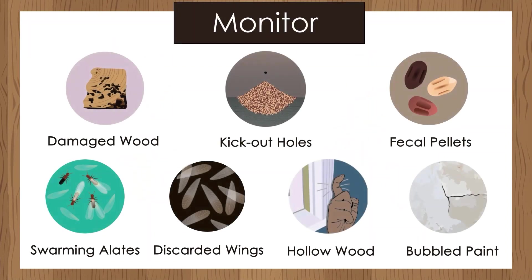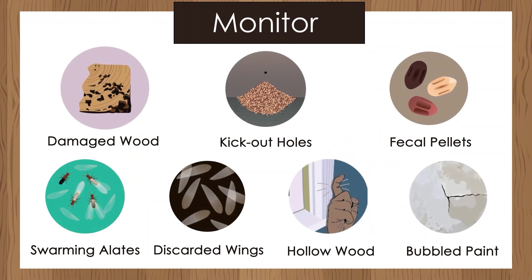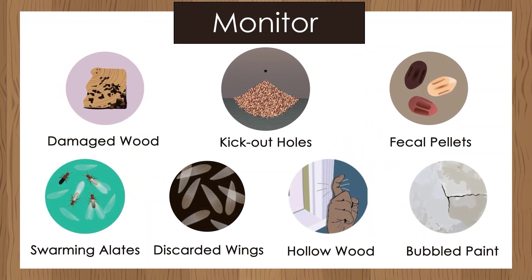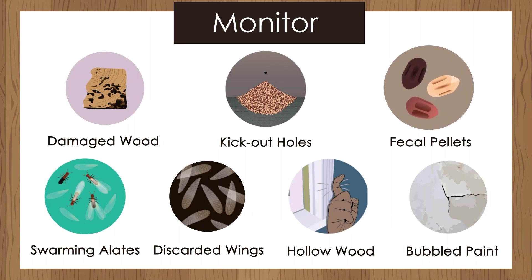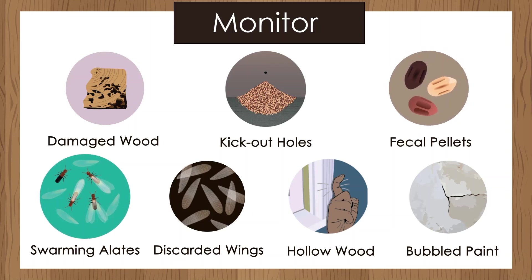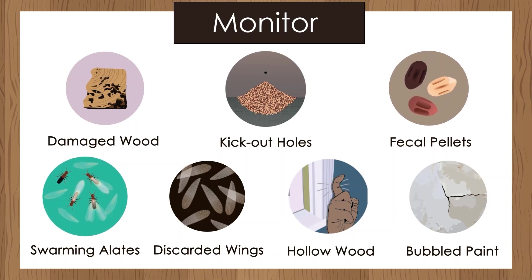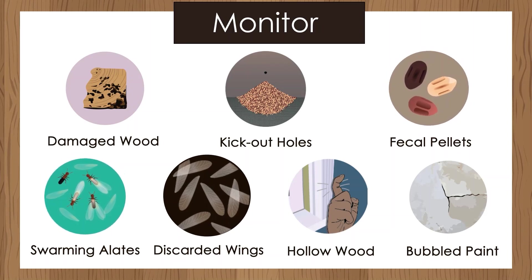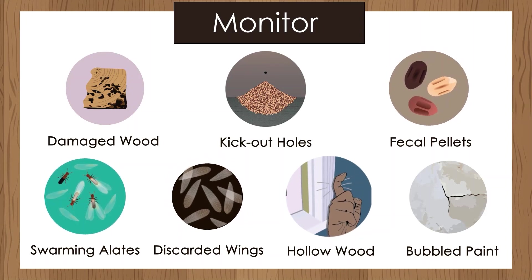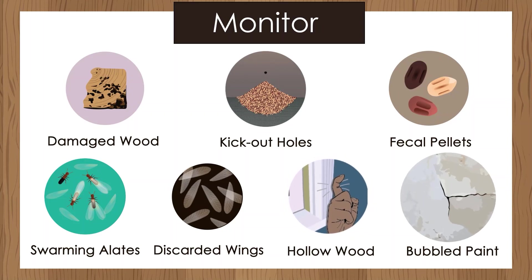When looking for signs of drywood termites, look for damaged wood, kick-out holes, fecal pellets, swarming alates, discarded wings, hollow wood, and bubbled paint.